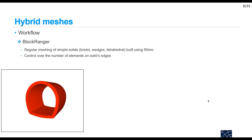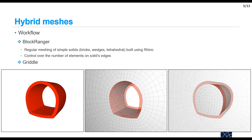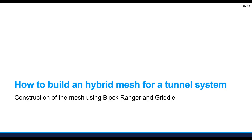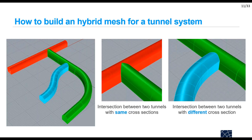I can use Blockranger to create the lining and then create the outer and inner tunnel volumes with Griddle. To go into more detail, I'll show you the sequence for creating the hybrid mesh for a tunnel system consisting of three tunnels — two with the same cross section and two with different cross sections.